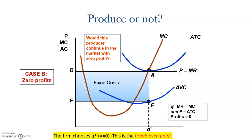Case B happens when the point where the price equals to the marginal cost coincides with the average total cost. At this point Q star, the marginal cost equals to the price and this coincides with the average total cost. Then the average revenue equals to the average cost, and we have zero profits. In this case, the firm will still produce in the short run as it is covering all its costs. In the short run, it is usual not to have positive profits, as the first weeks or months after beginning a new business are tough and there are many expenses to cover. When we have zero profits in the short run, we will keep producing, and this is called the break-even point.